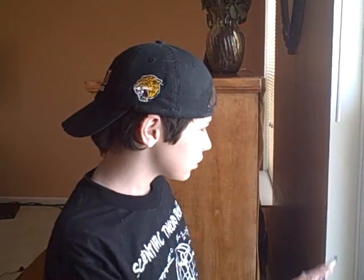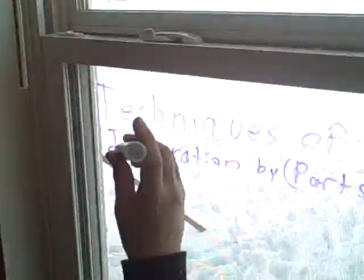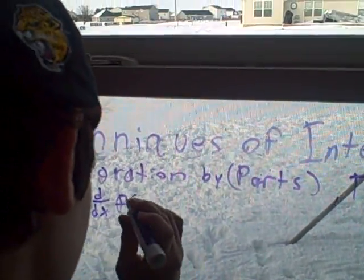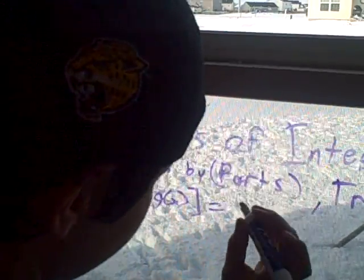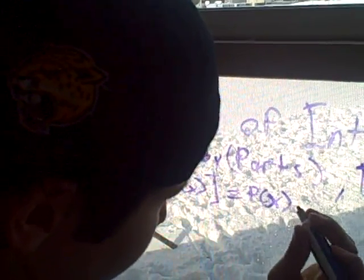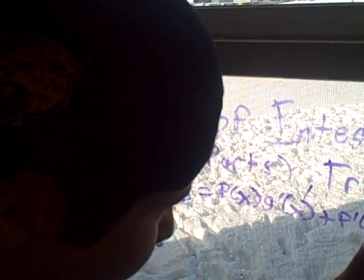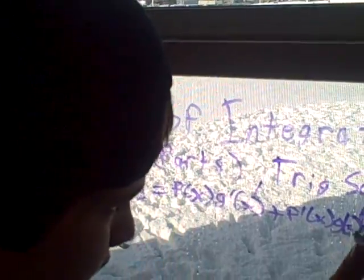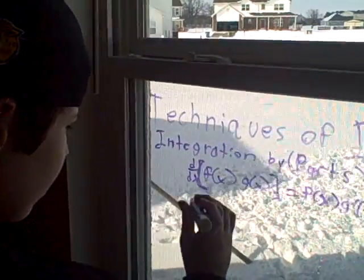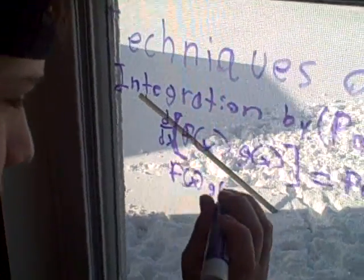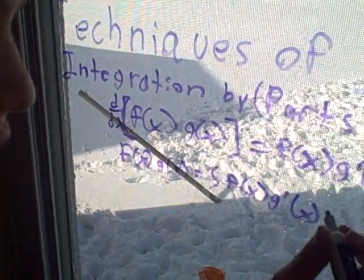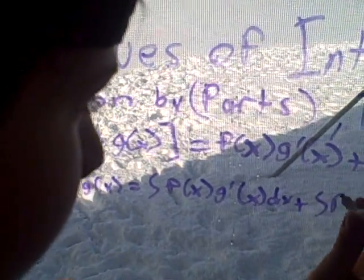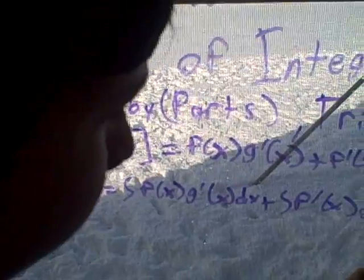So, let's start with integration by parts, and don't worry, I am here to help you with all your math phobias. We have integration by parts. I can go back to Calculus 1 and say: d/dx of f(x) times g(x) equals f(x) times g'(x) plus f'(x) times g(x). I can take the integral of both sides, so I get f(x)·g(x) equals the integral of f(x)·g'(x) dx plus the integral of f'(x)·g(x) dx.